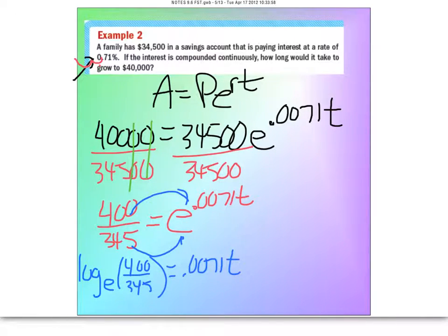Now, again, we normally don't write it like this, so let's rewrite it with this natural log. So this is just natural log of 400 over the 345 equals, again, 0.0071T.